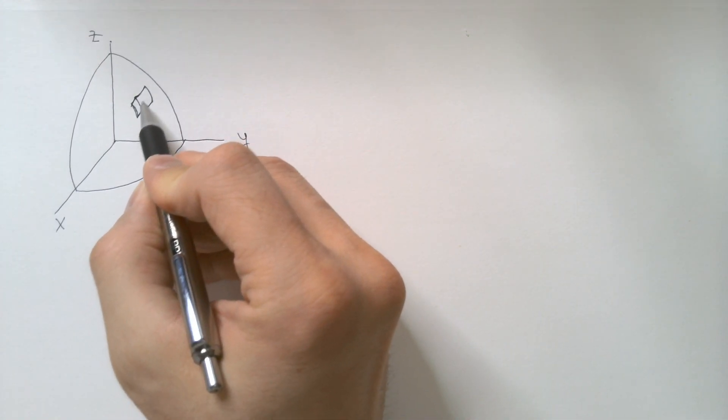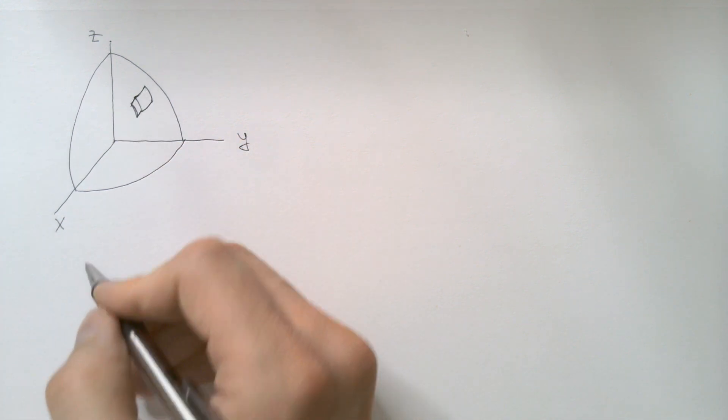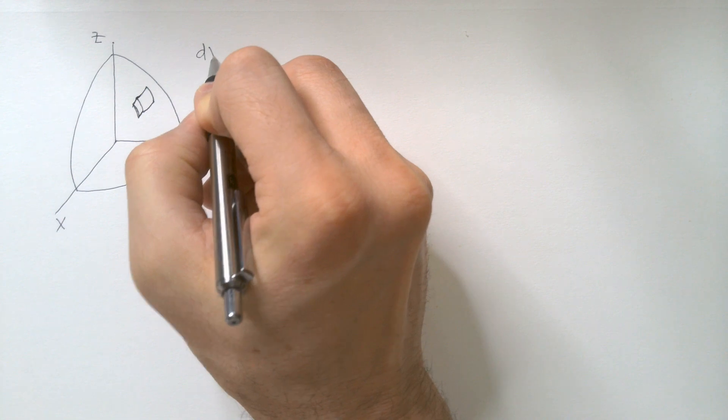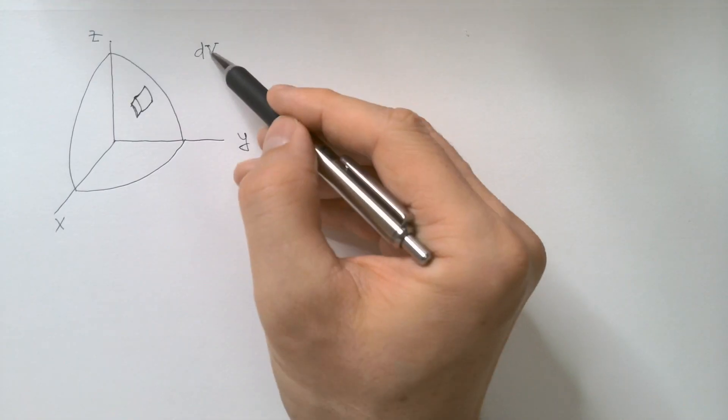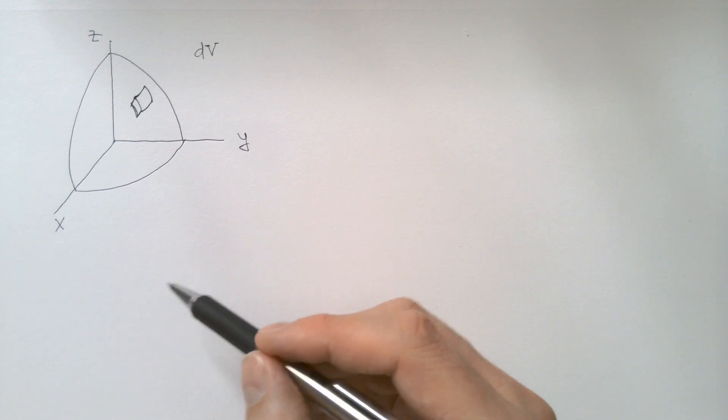And now this surface times this depth will be volume element dv. How do we find this volume element using spherical coordinates?